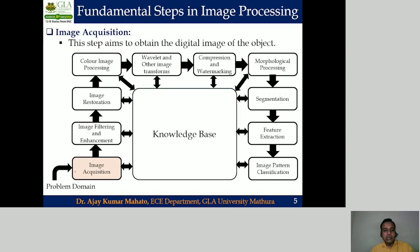The next step of digital image processing is image acquisition. The objective of image acquisition is to obtain the digital image of an object. In the real world all objects are continuous in nature, so in order to represent those continuous objects in our digital computer we have to convert them into digital format. This process of converting a real-world object into its digital image format is called digitization, and it involves two steps: sampling and quantization.